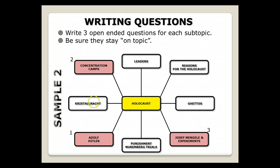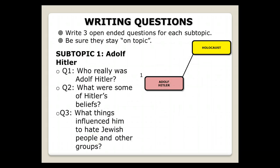Okay, so if I'm going to ask three open-ended questions about Adolf Hitler, I can't have one of my questions be about Joseph Mengele in that section. All right, so if I continue here, here's an example. So my first subtopic, Adolf Hitler. My first open-ended question might be something like, who was Adolf Hitler?